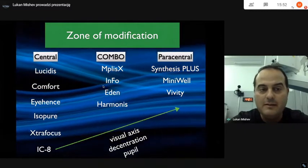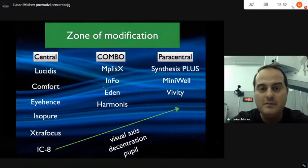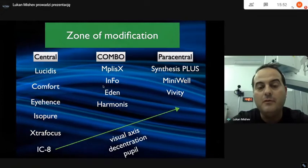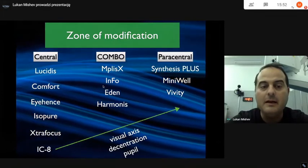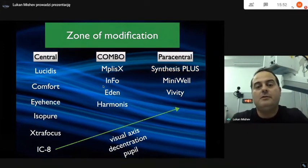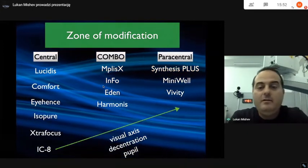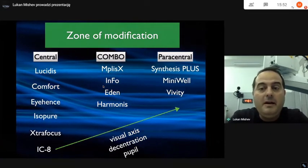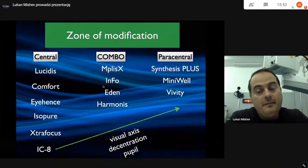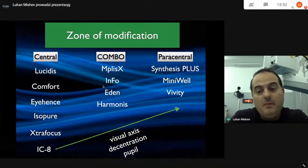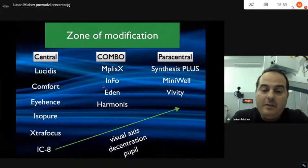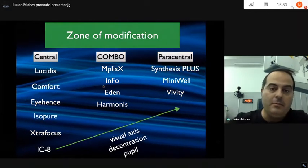All lenses with central elements that increase depth of focus are mainly dependent on good centration and angle kappa less than 0.5. Combo lenses are a different story because they employ central and paracentral elements. Paracentral lenses like Synthesis Plus seem to tolerate much greater visual axis decentrations and are less dependent on large angle kappa.